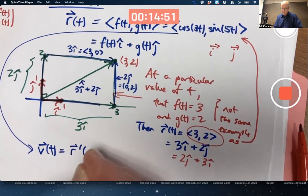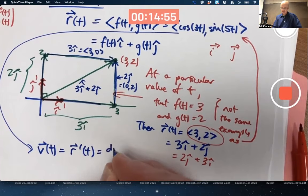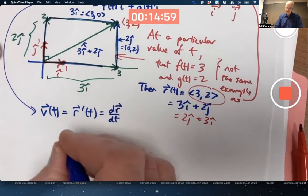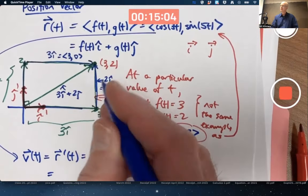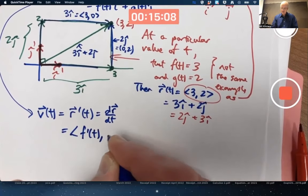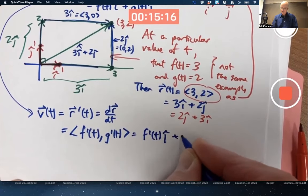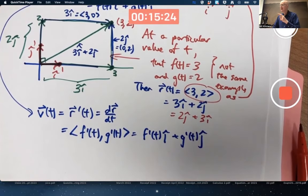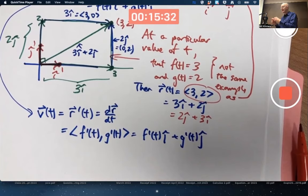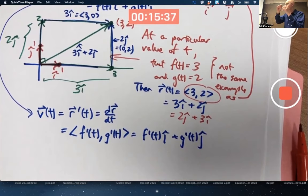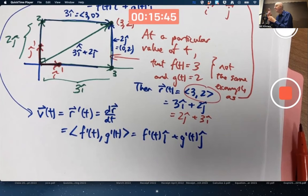It would be the derivative of the position vector. I could write r prime of t or in Leibniz notation, dr/dt. By definition, this is found by differentiating f and g individually, creating a new vector whose components are the derivatives of the original. Here's the punchline: when you give yourself the freedom with the velocity vector to not have its tail at the origin, but instead have it at the location of the particle as it's moving, it will always point tangent to the curve and its length will be the speed.